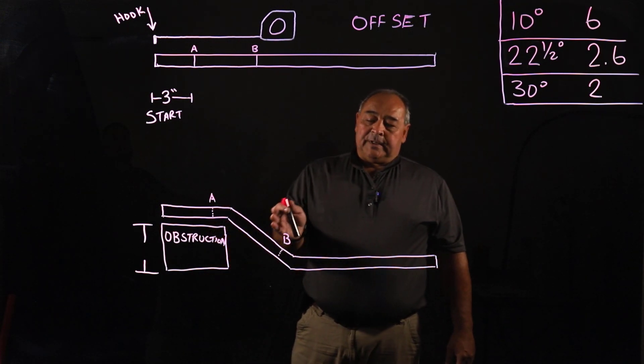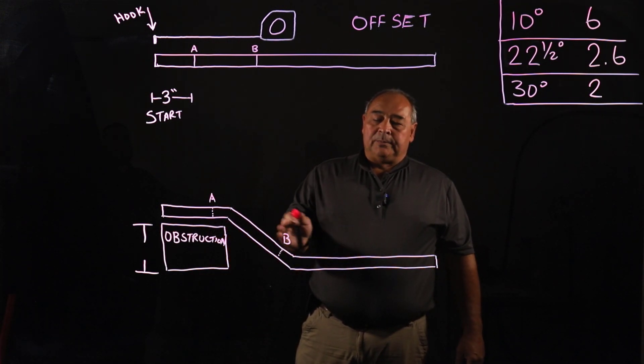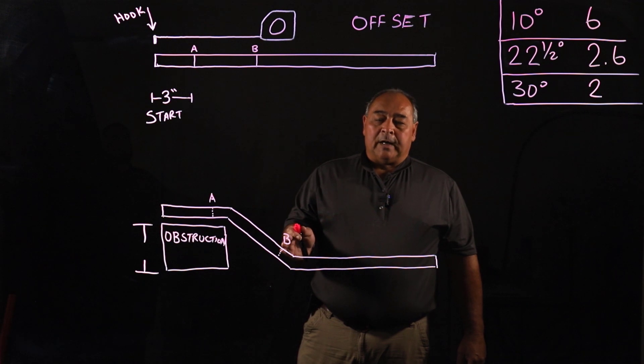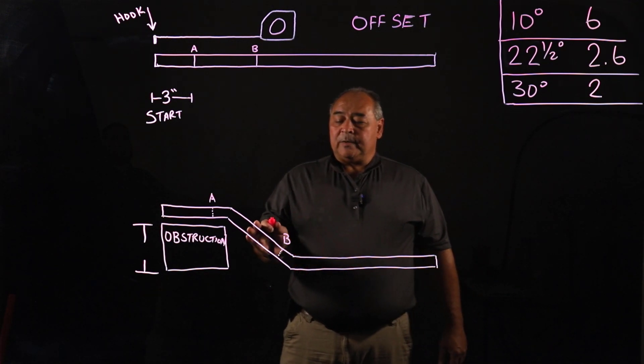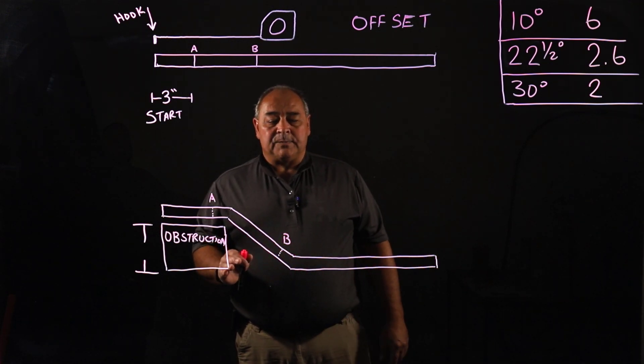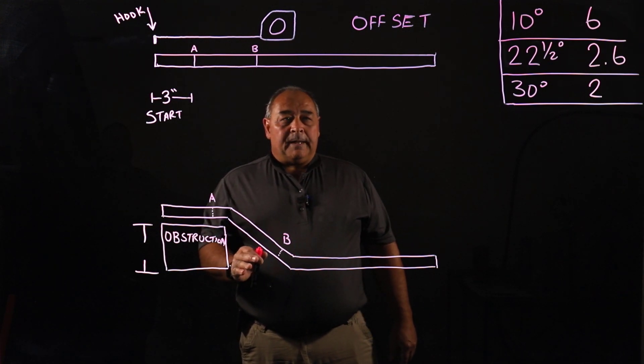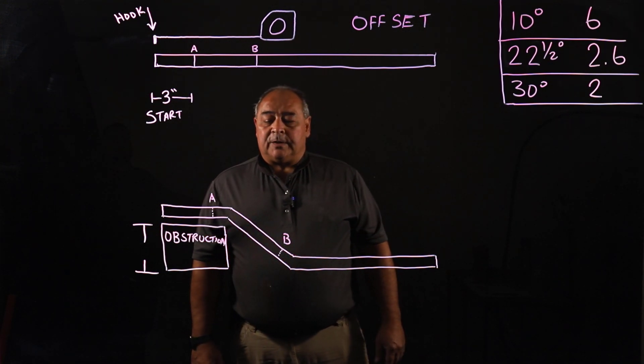The less bends we can have in conduit, the easier we're going to be able to pull the wire through the conduit. So we want to minimize the bend as much as possible and using a 30 degree is our go-to solution.